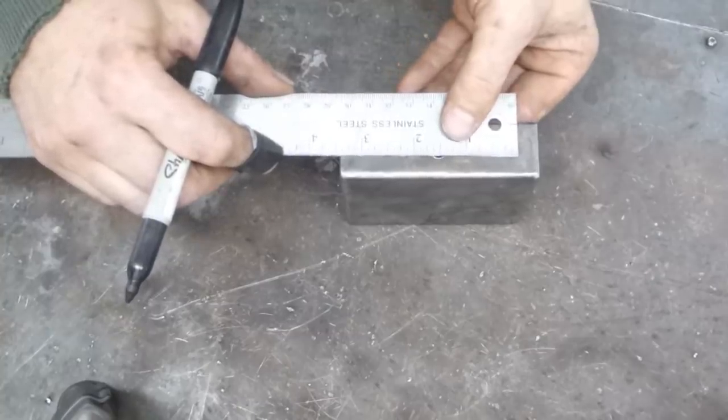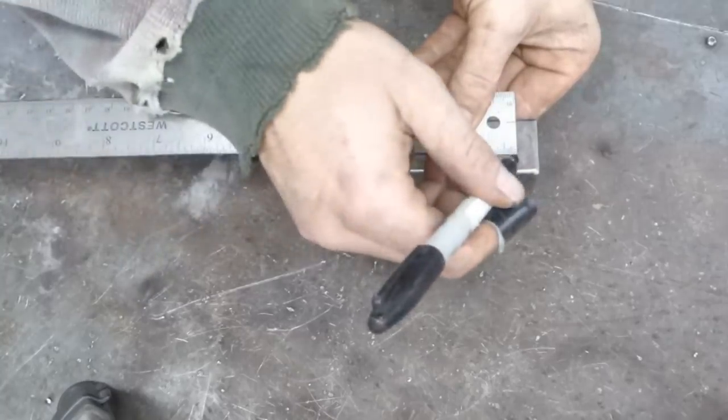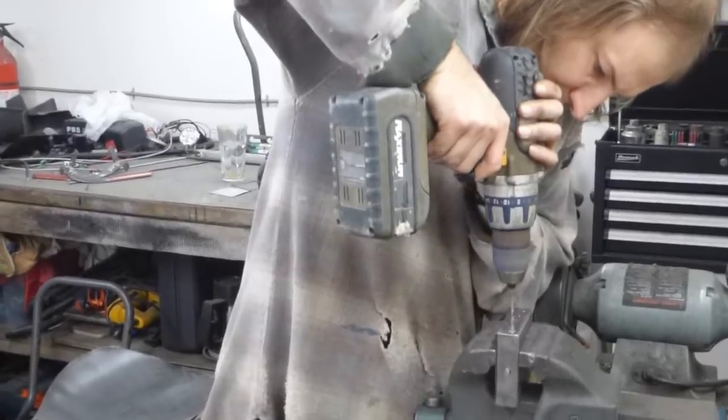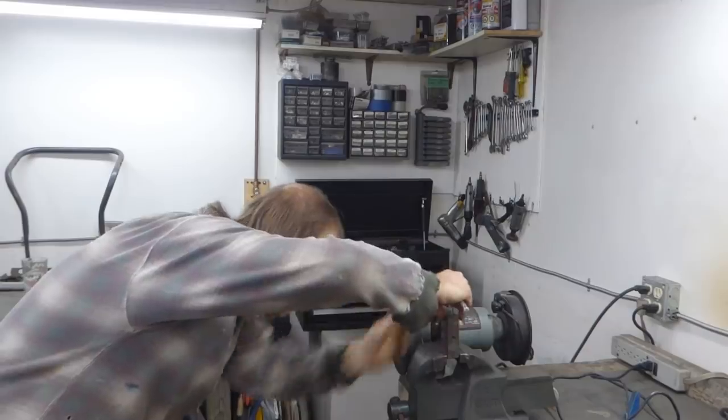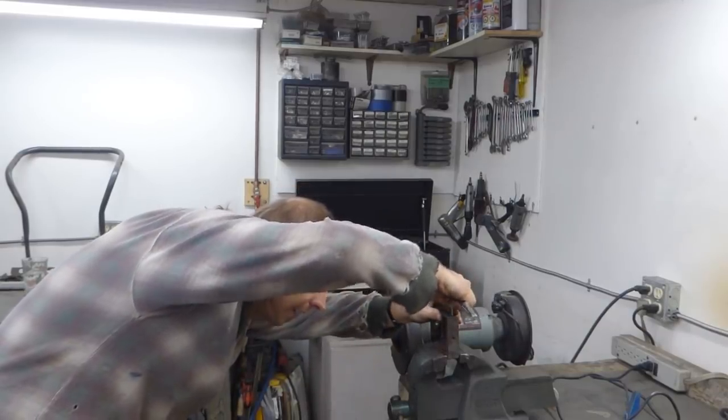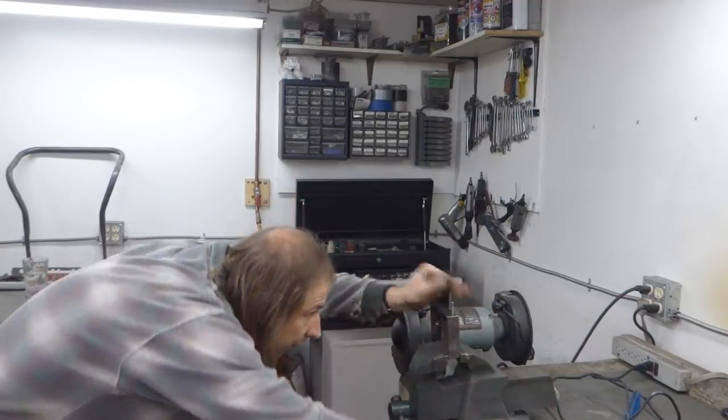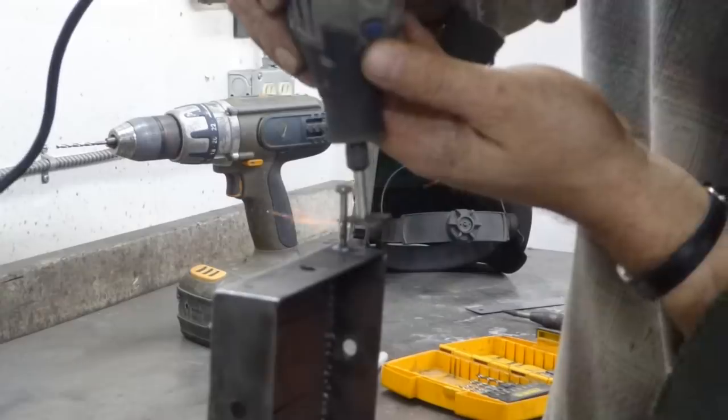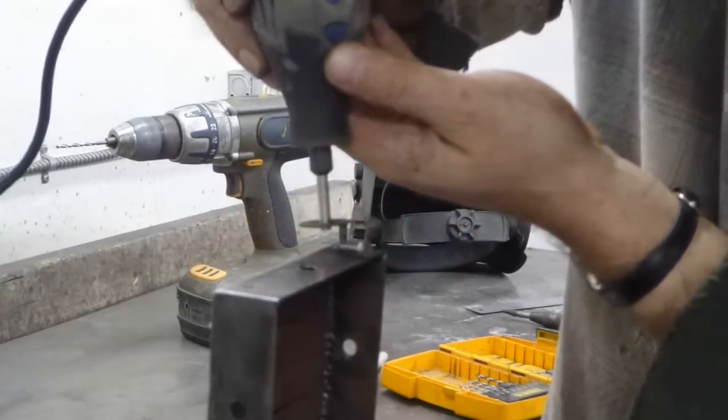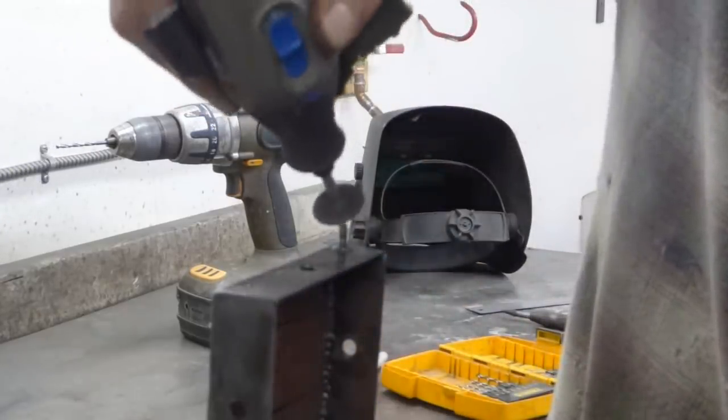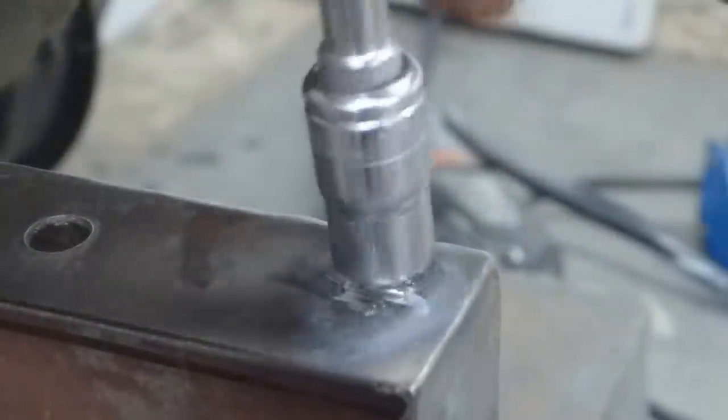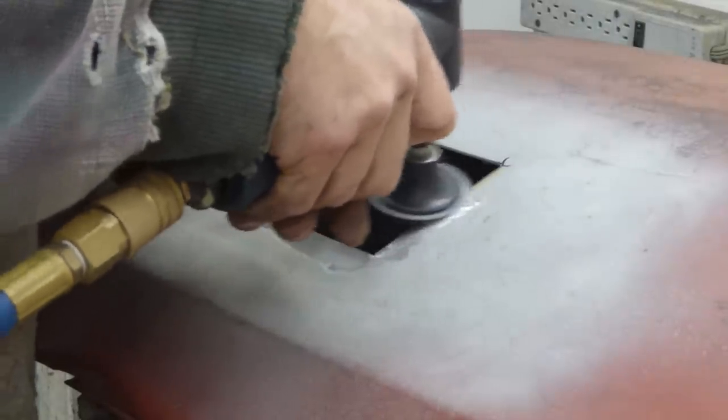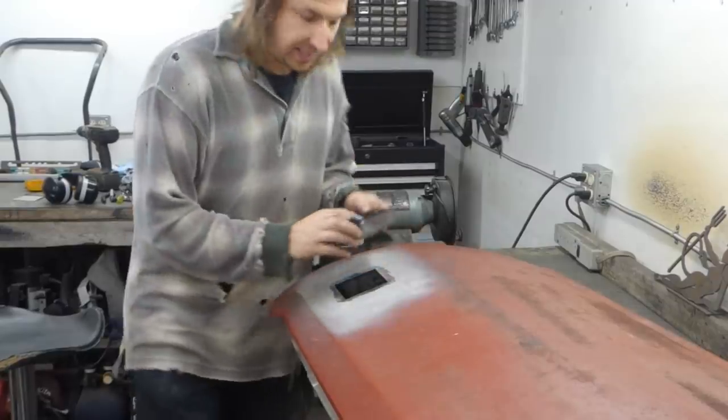Before I weld this thing into the door, I'm going to add some studs to the bottom of it. I'm going to put them three inches apart so there will be some way to mount the RFID reader electronics. Sweet. Oh, now I just have to weld it in.